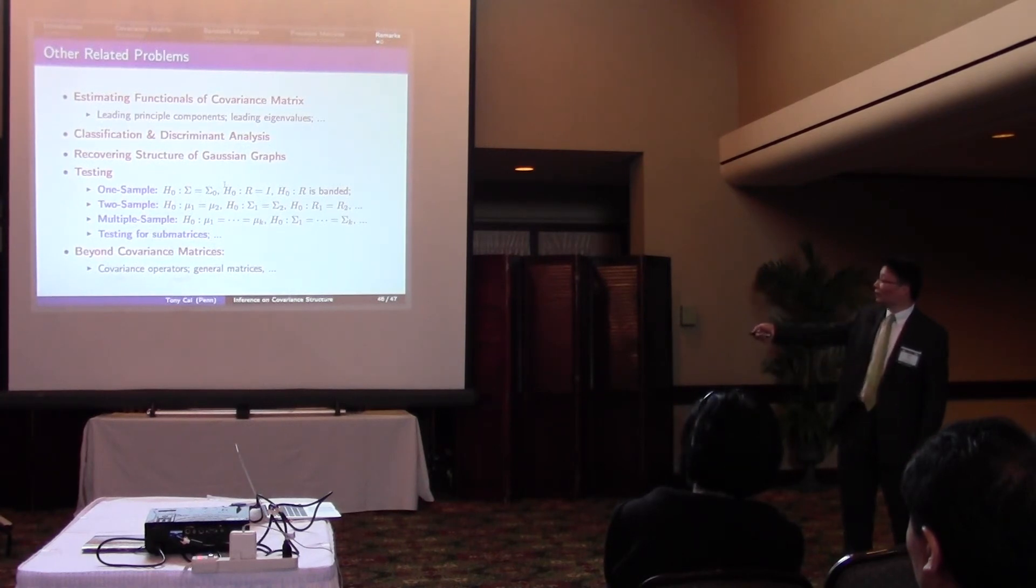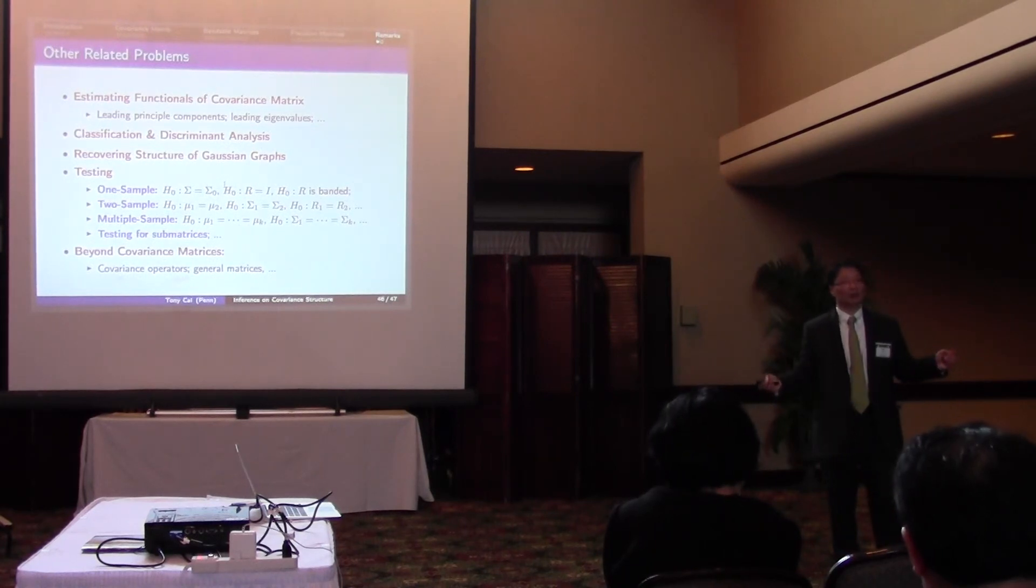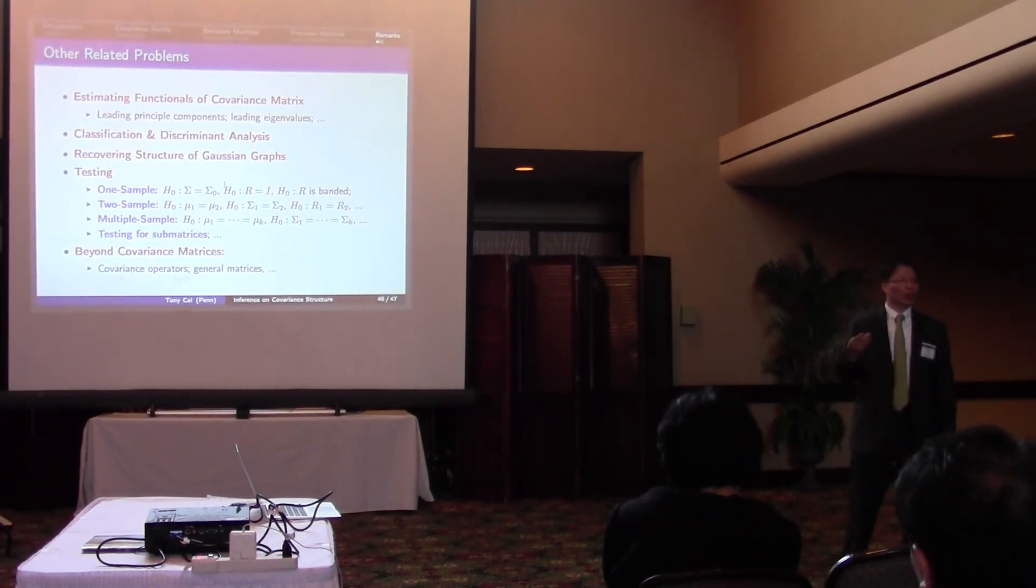And there are other problems that you can go beyond covariance matrix. For example, instead of covariance matrix of high-dimensional random vectors, you can have random vectors observed on a lattice graph or on some other well-structured object. Then what you want to estimate is not a matrix.